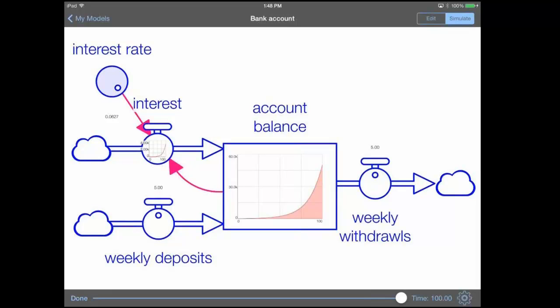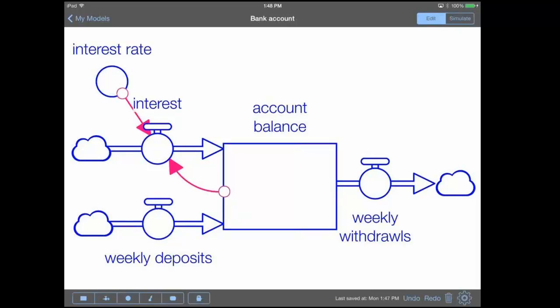The next new feature that we're interested in is our new Snap to Guides feature, and this allows us to create much more beautiful and clean models by using a new feature here, which you can see, which are these dashed blue lines that we get as we move elements across the screen.